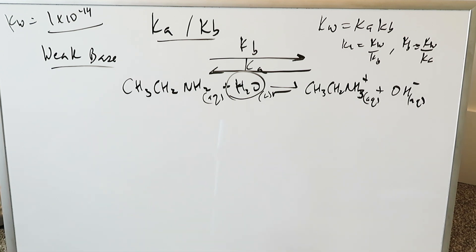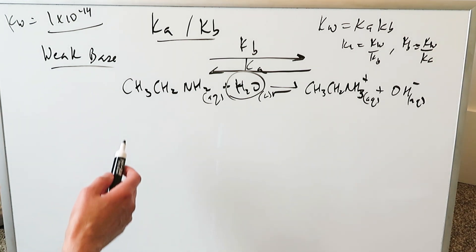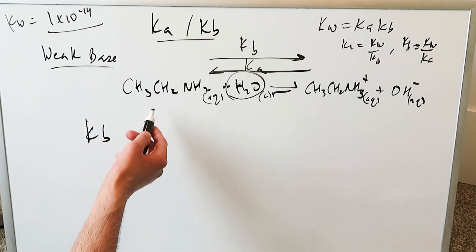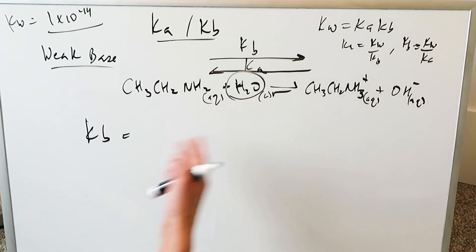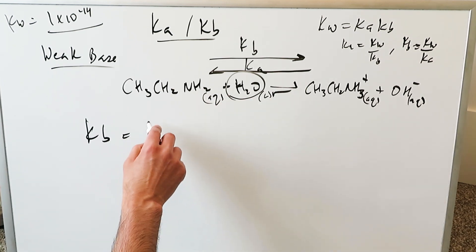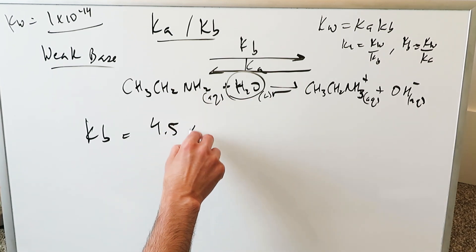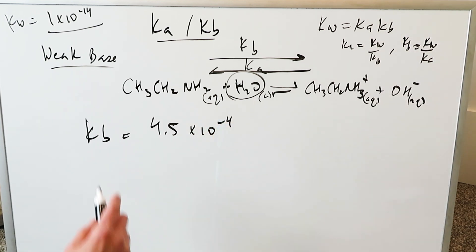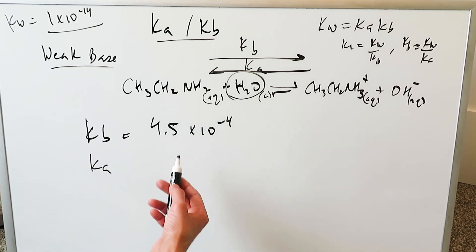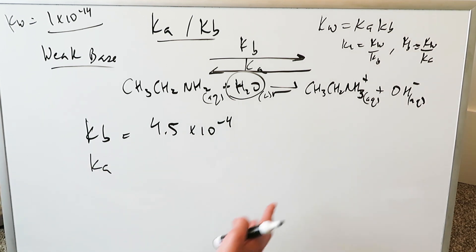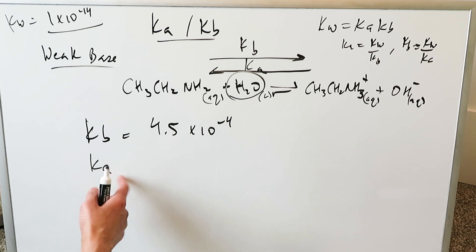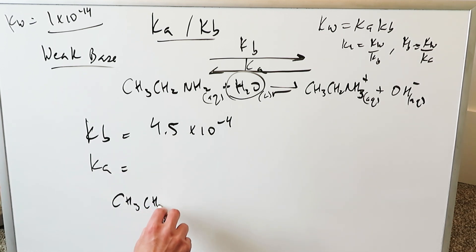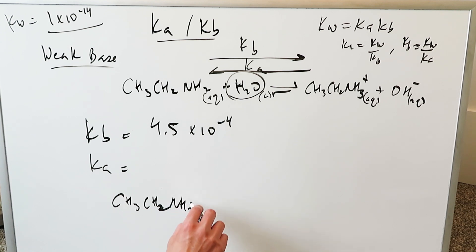Focusing only on the weak base example: if the KB of ethylamine — that is, the forward reaction — is 4.5 × 10⁻⁴, it's a small number close to 0, which tells you you're looking at a weak base. Then for the reverse reaction, if you were doing a titration question and the reverse reaction came into play, you'd have to bring in the Ka — because your reaction shifted, with the ethylammonium ion coming into play.